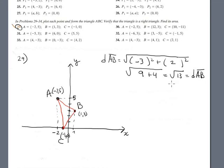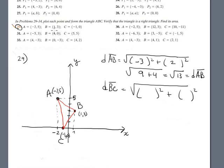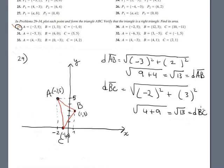Now distance BC: subtracting the components. The x-component is 1 minus negative 1, which is 2, giving negative 2 — actually B is 1 and C is negative 1, so that's negative 2. The y-component: 3 minus 0 is 3. This gives square root of 4 plus 9, which is square root of 13 again.